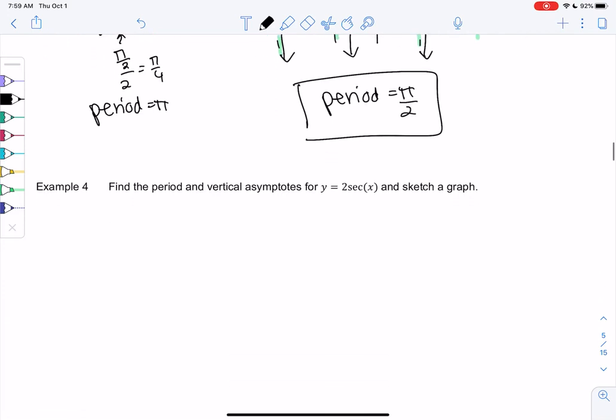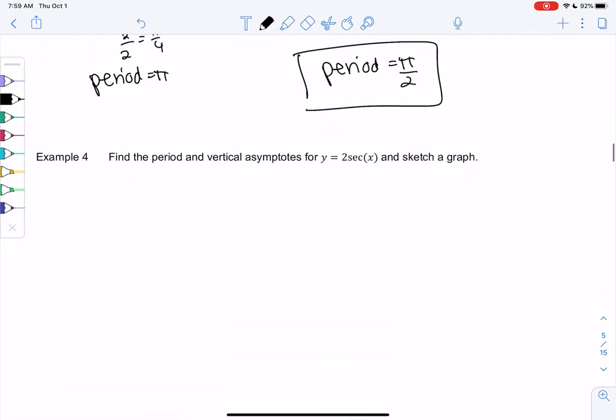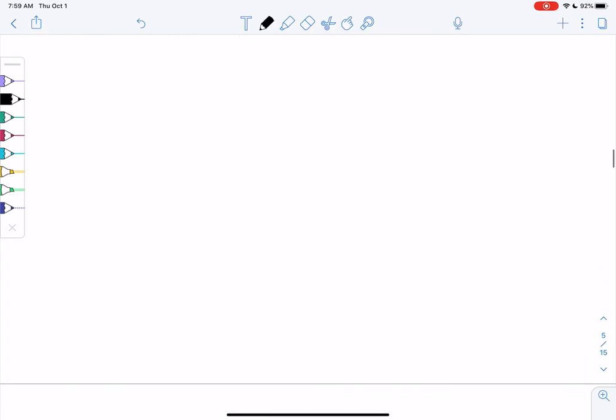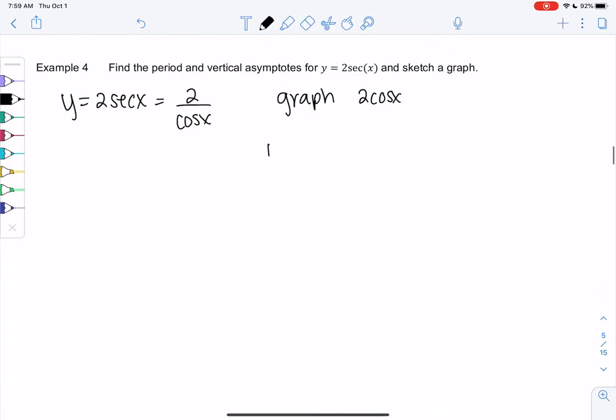Let's check out secant now. If I'm going to do y equals 2 secant x, because it's 2 over cosine x, I'm actually going to graph 2 cosine x and you'll see why in a second.